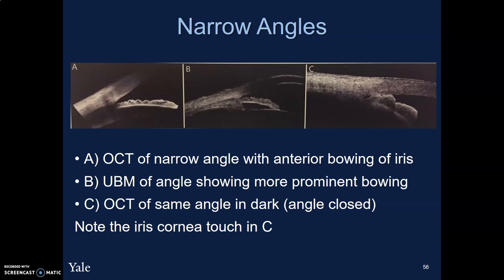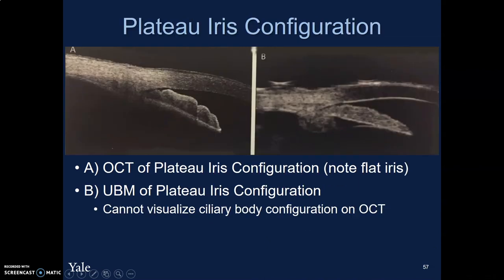In terms of looking at narrow angles, here we have three different pictures. The first is an OCT of narrow angles demonstrating anterior bowing of the iris. We can compare that to the UBM which shows the narrowing more prominently and the ciliary body more clearly. When we repeat the OCT of that same angle in the dark, we can clearly see that the angle is quite closed off and the iris is touching the cornea. Regarding plateau iris — even though the OCT can't visualize the ciliary bodies, you can sometimes see subtle findings that may prompt you to consider UBM. An OCT of the angle may show an iris that is flatter and looks peculiar, and when you do the UBM you can confirm the ciliary bodies are in that plateau iris configuration.